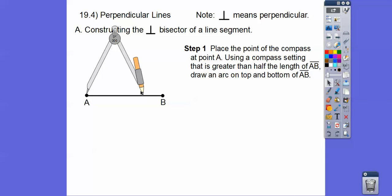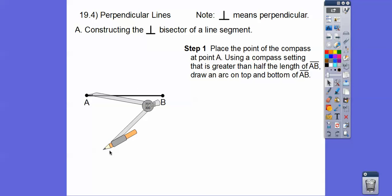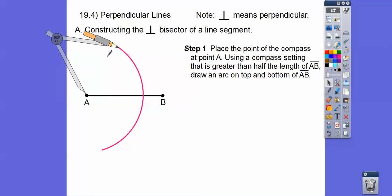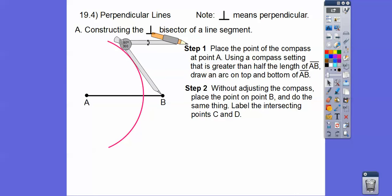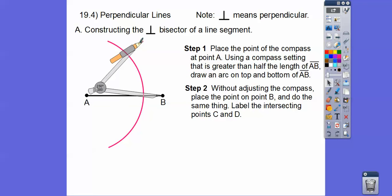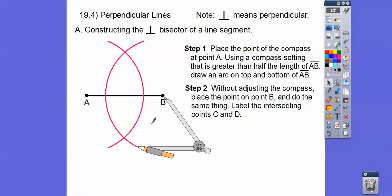Using the compass setting that's greater than half the length of AB — so as long as this opening is farther than half the length — draw an arc on top and on bottom. You can just draw one big arc right there. Then step two says without adjusting the compass, place the point on B and draw arcs on top and bottom. Just make sure the arcs intersect, and that's why it has to be over half the length — if it wasn't, they wouldn't reach each other.